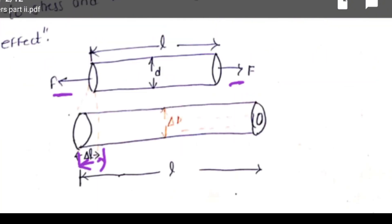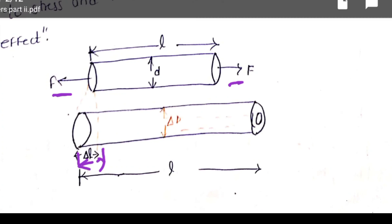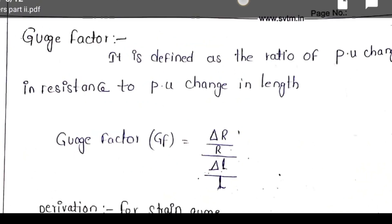What is gauge factor? For a small change in resistance, what is the corresponding change in length? If the length deformation changes, delta L, or delta R is the change in resistance, or delta D is the change in diameter of the material, gauge factor is defined as the ratio of per unit change in resistance to per unit change in length. The change in resistance for a small change in length is known as gauge factor.